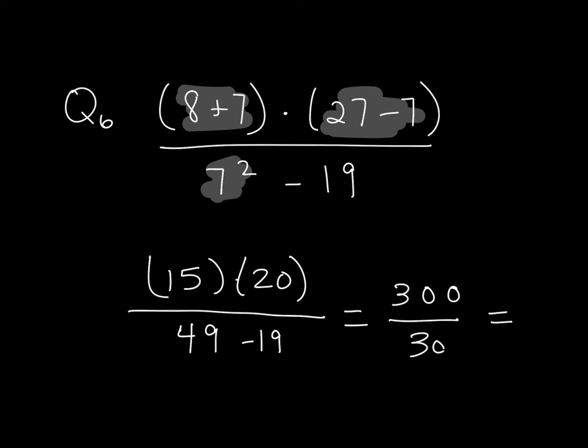So all of this now, I divide, and whenever you have zeros, you can just cancel them out. I divide it by 10, and then 30 divided by 3 is just equal to 10.